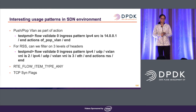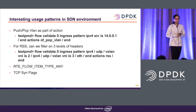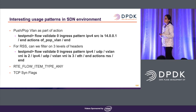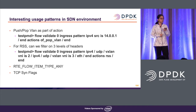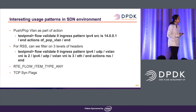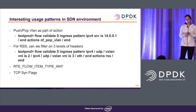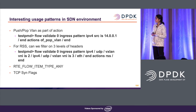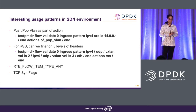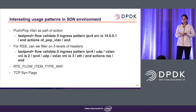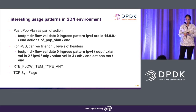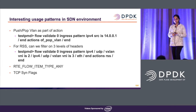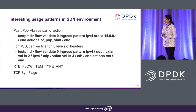TCP syn flags are generally used for connection tracking. For instance, we might want to track a flow state until we see a reset, or match SYN and SYN-ACK to track NAT flows. In an SDN environment, we can have a different packet processing pipeline for connection startup or teardown. So we also wanted to check whether current vendors allow matching on packets based on TCP syn flags.